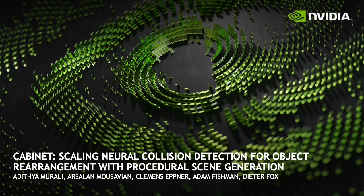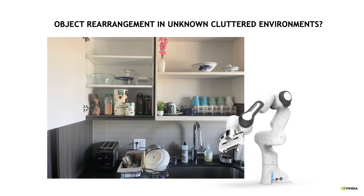We present our work, Cabinet, on scaling neural collision detection for object rearrangement with procedural scene generation. Object rearrangement in unknown cluttered environments, such as in homes and warehouses, is an important open challenge in robotic manipulation.